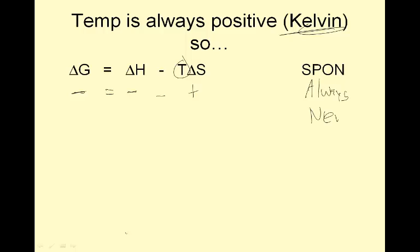If I wanted it to be never spontaneous, I would have delta G as positive because that means it's not spontaneous. Delta H would be the opposite of favored — increasing energy. Nature doesn't like that. And then it would lose disorder, so it would become more ordered, so delta S would be negative. So positive minus a negative would always be a positive.